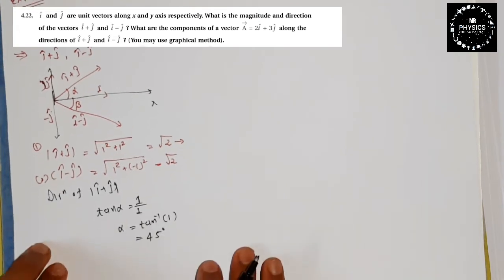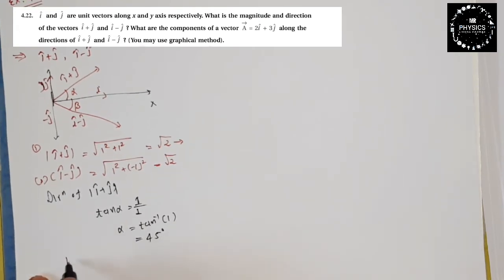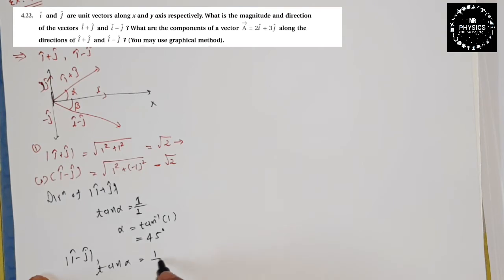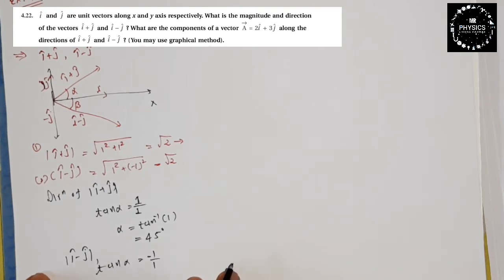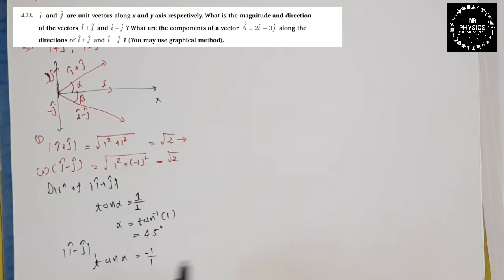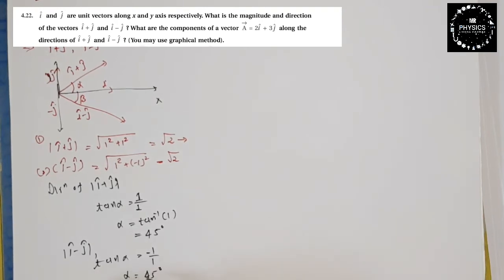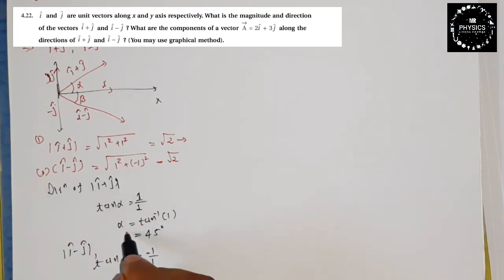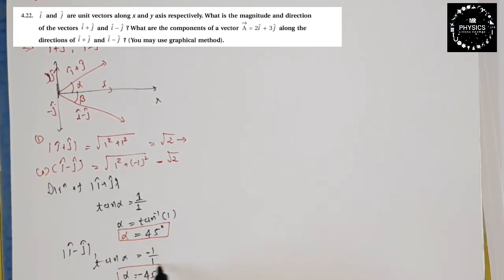Similarly, for (i-j), tan(α) = -1/1, so we will get α = -45 degrees. So the directions of both vectors are also defined — +45° for (i+j) and -45° for (i-j).